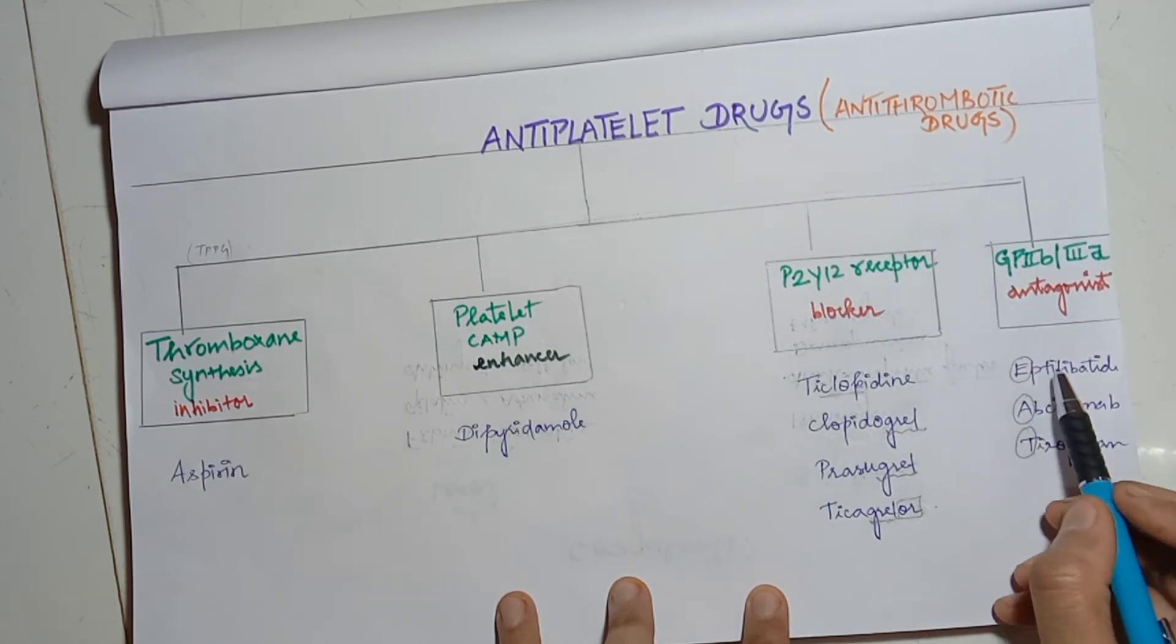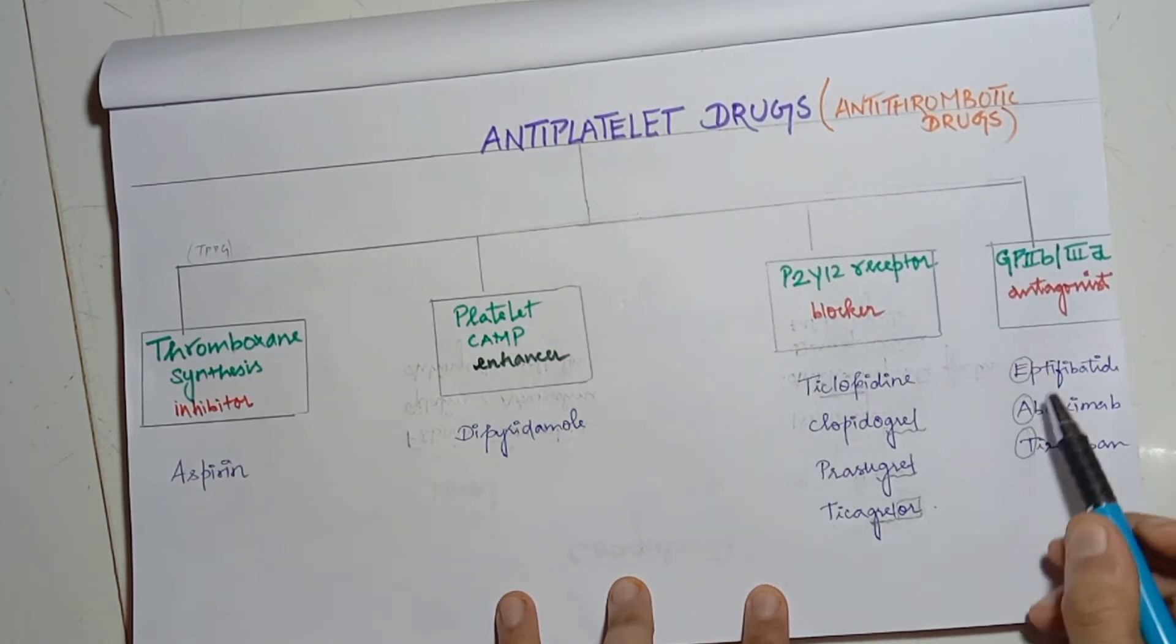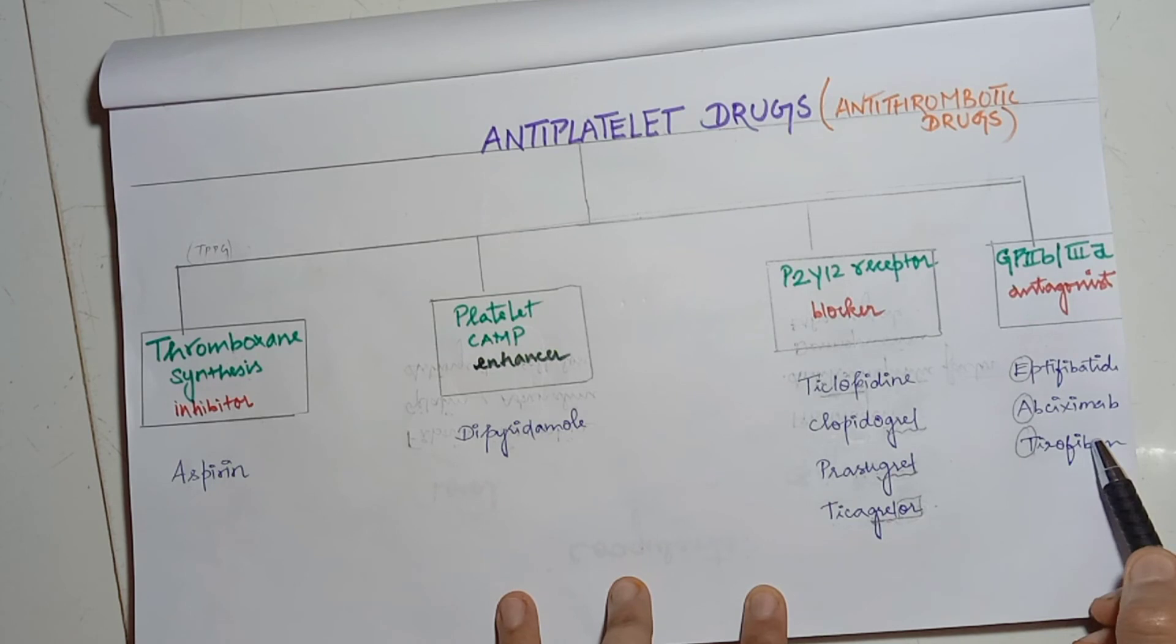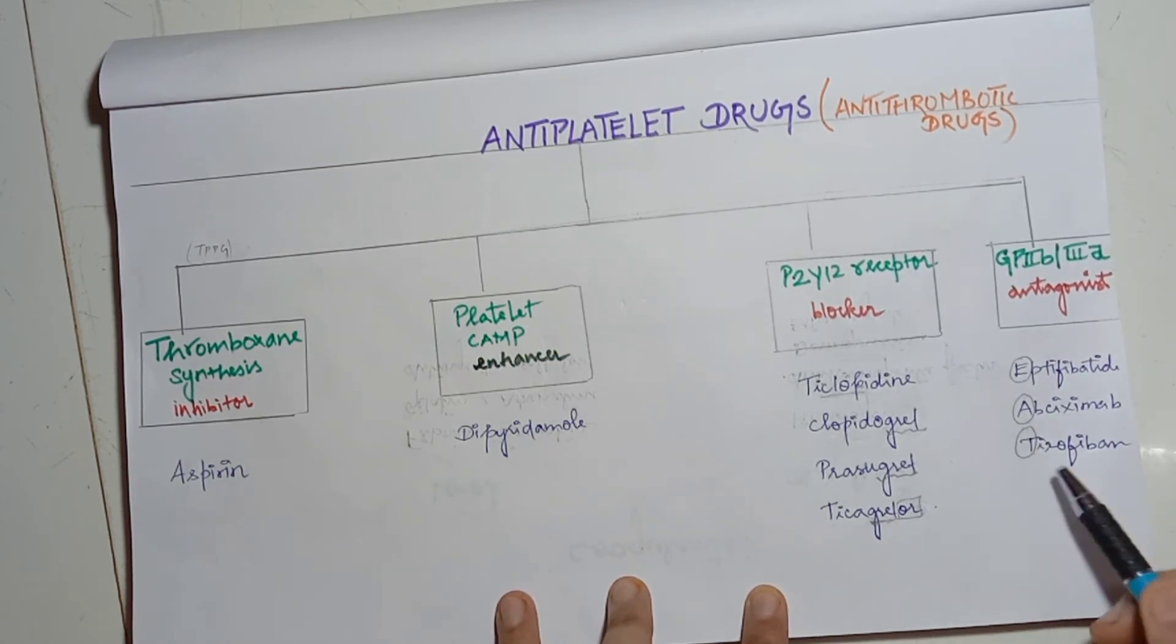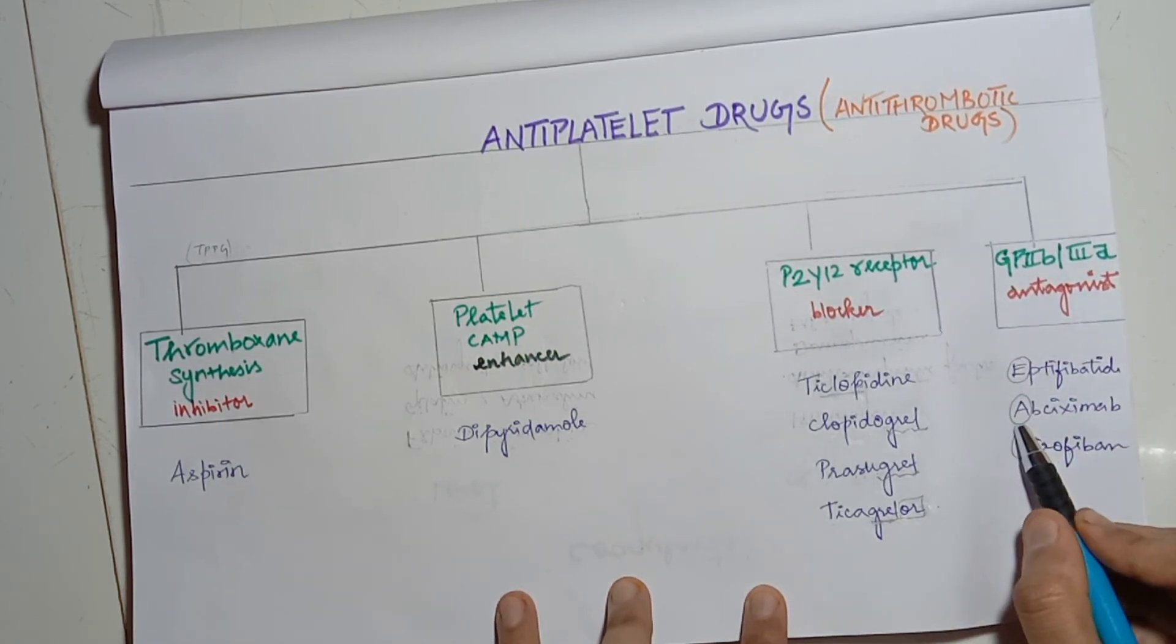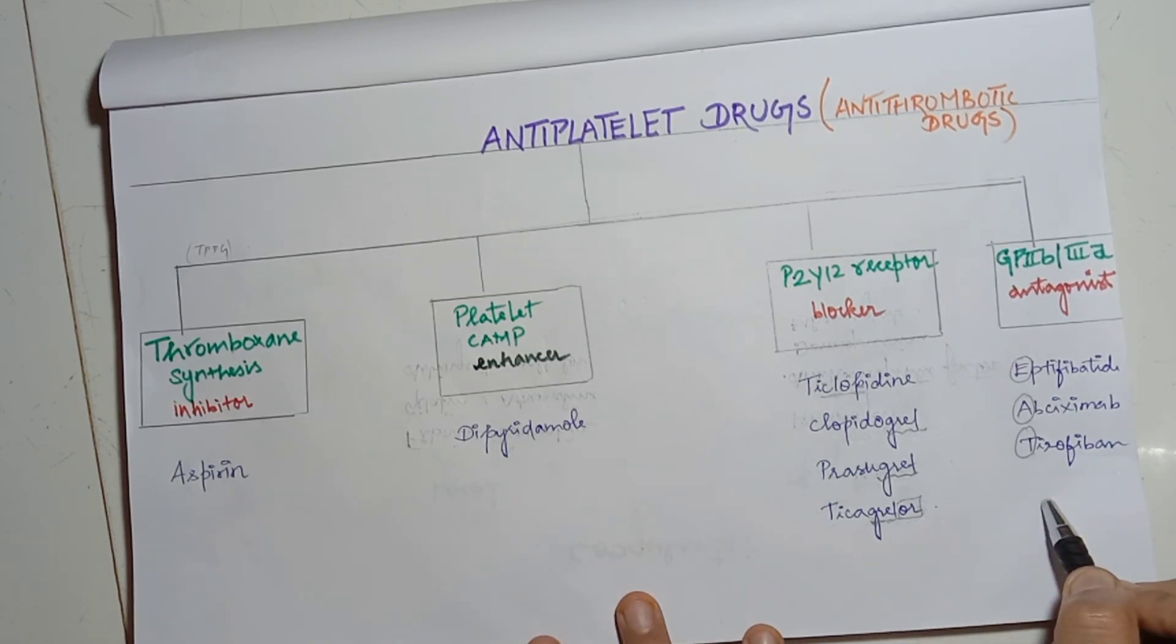In GP2B3A, you need to EAT all the words - that's the mnemonic. EAT: eptifibatide, abciximab, and tirofiban. You will remember EAT. So, done. Happy learning!